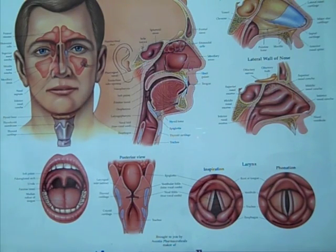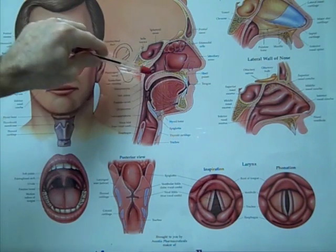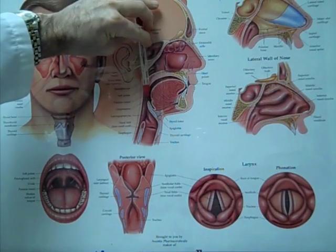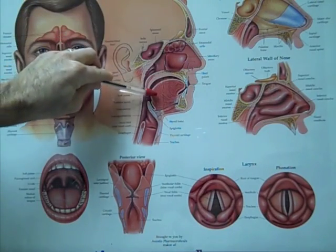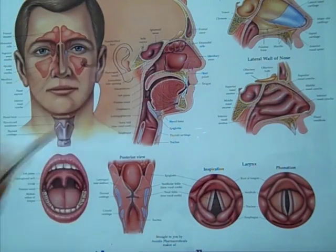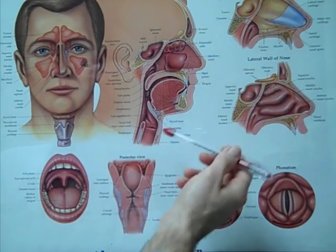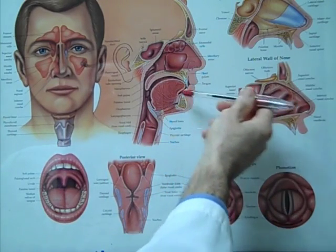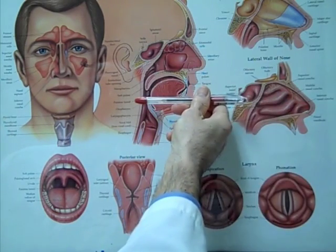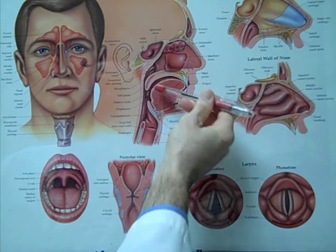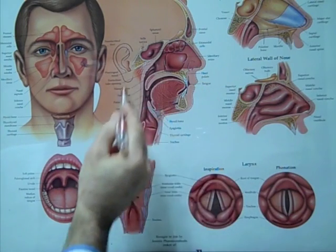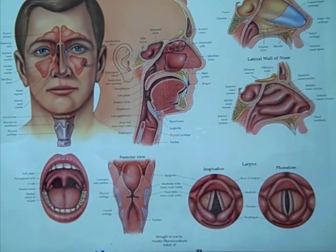From the side view, this structure drops down like so, creating a blockage in your airway. In addition, in patients with an overbite, where the lower jaw is set back, the tongue is then pushed into the airway, further compromising the obstruction in the airway.